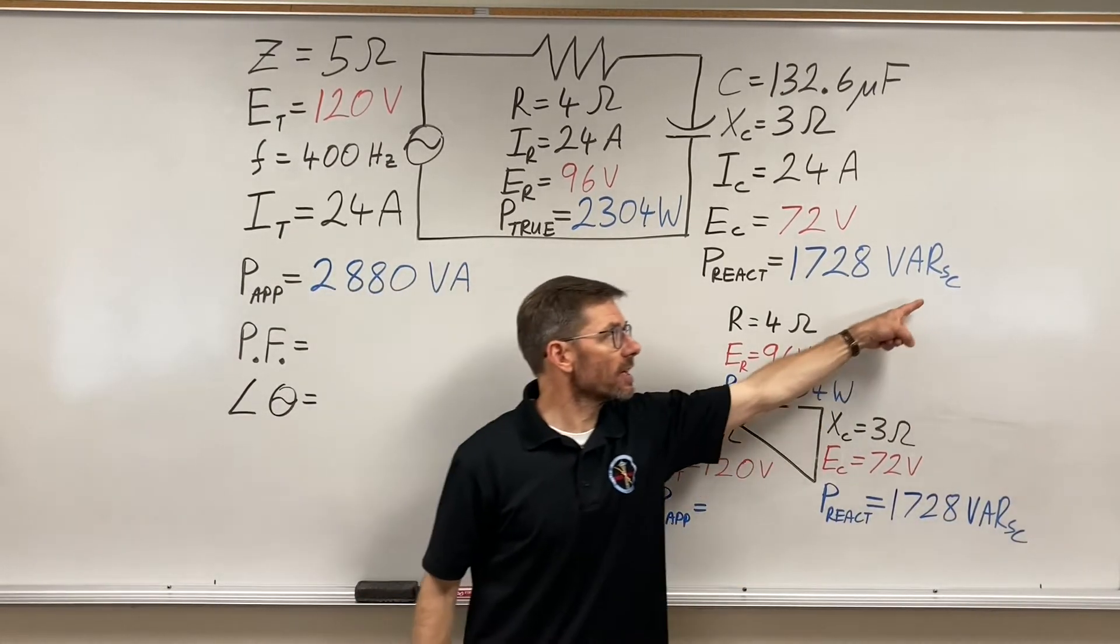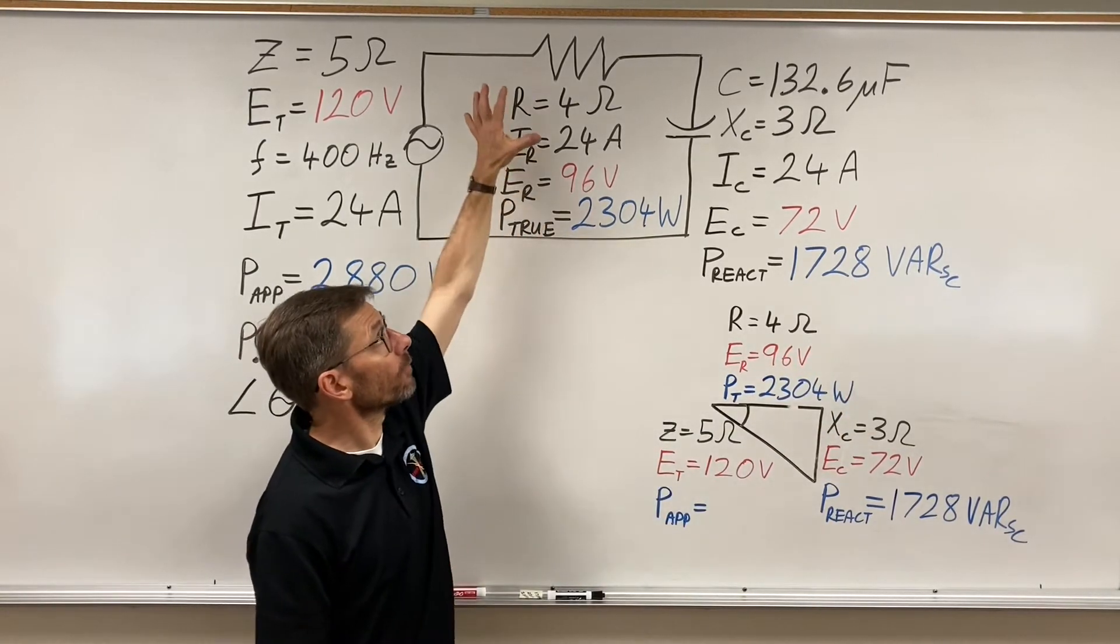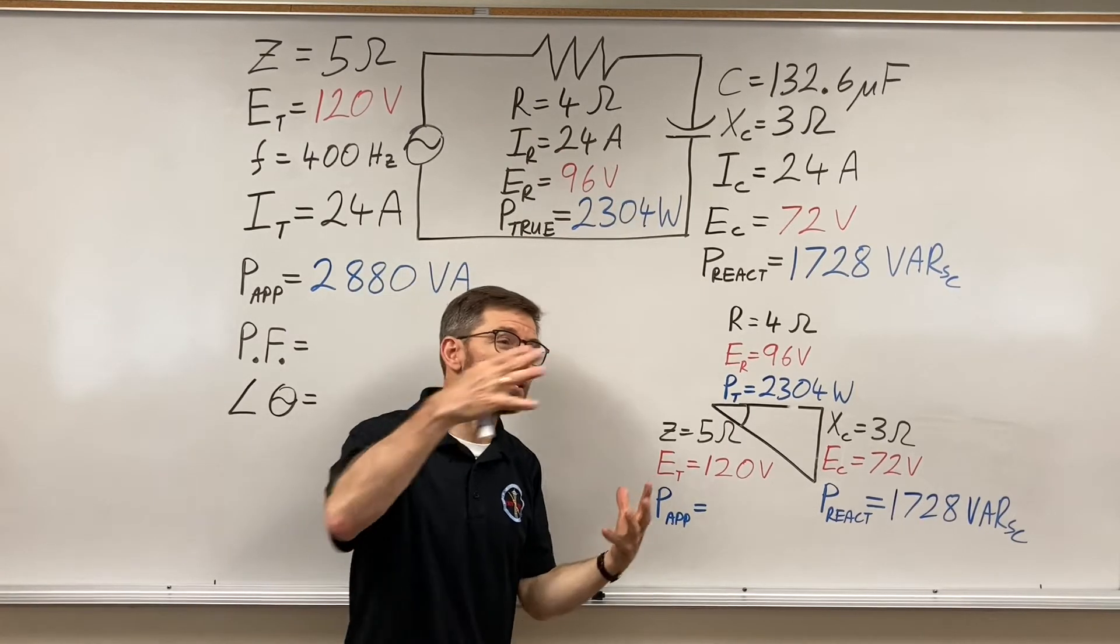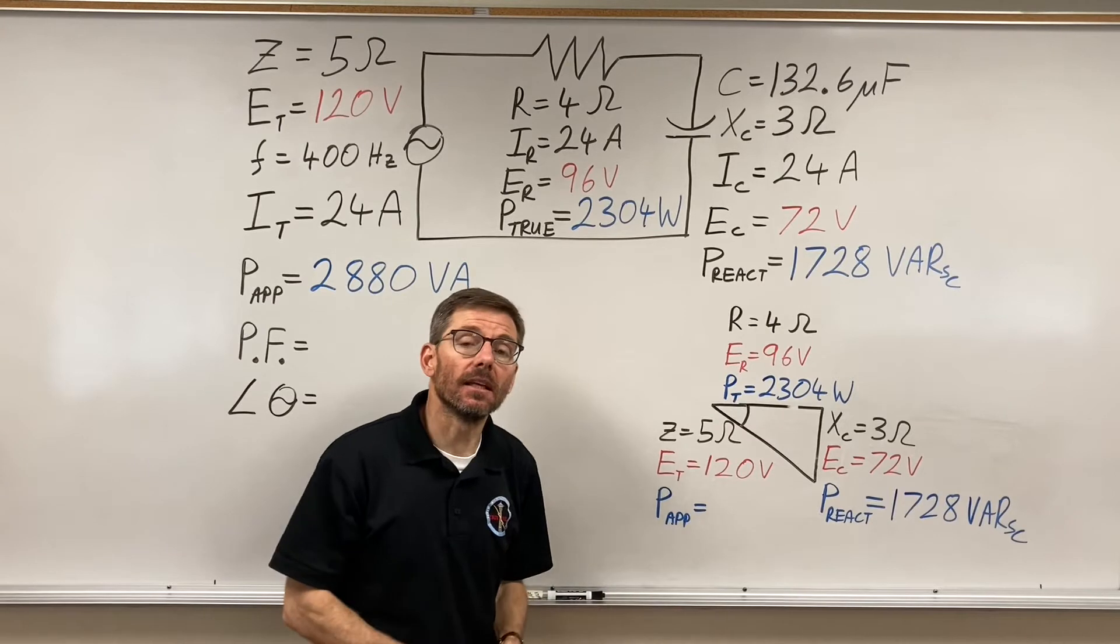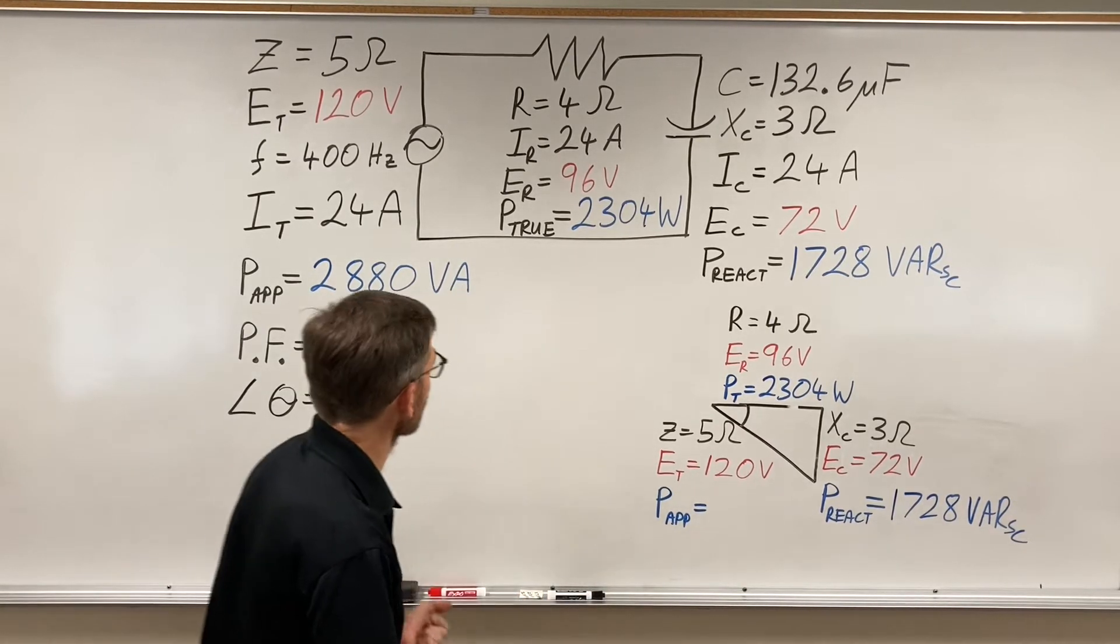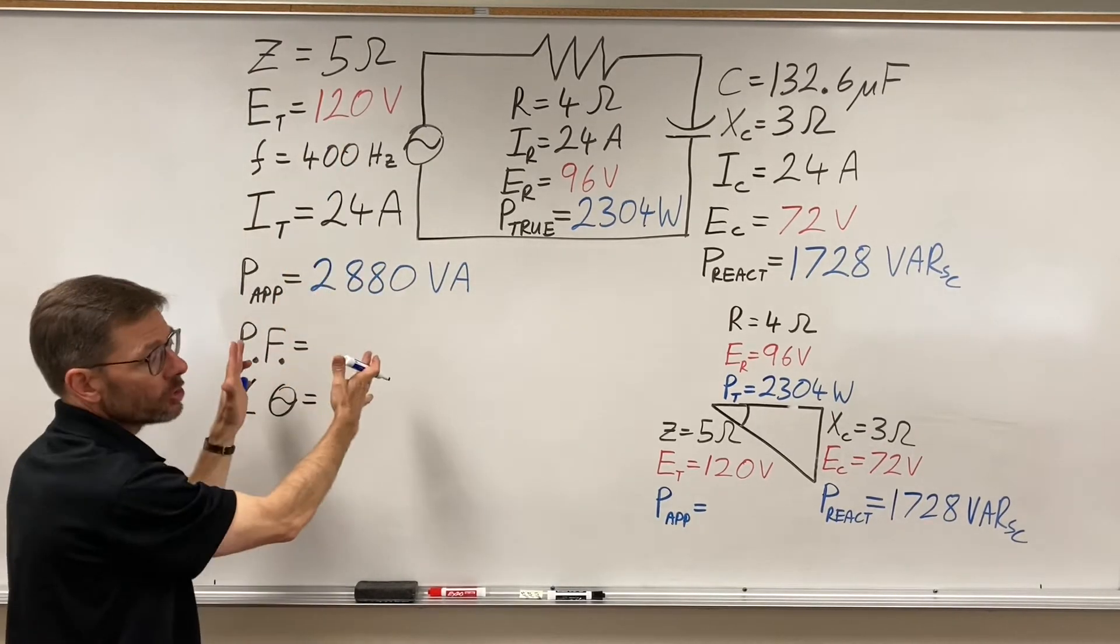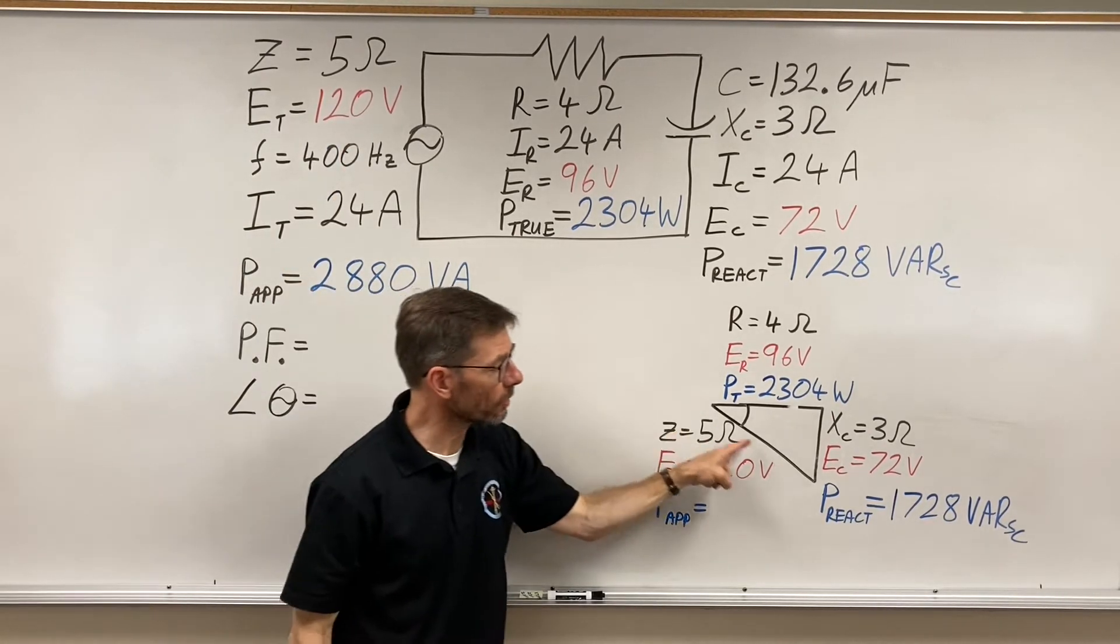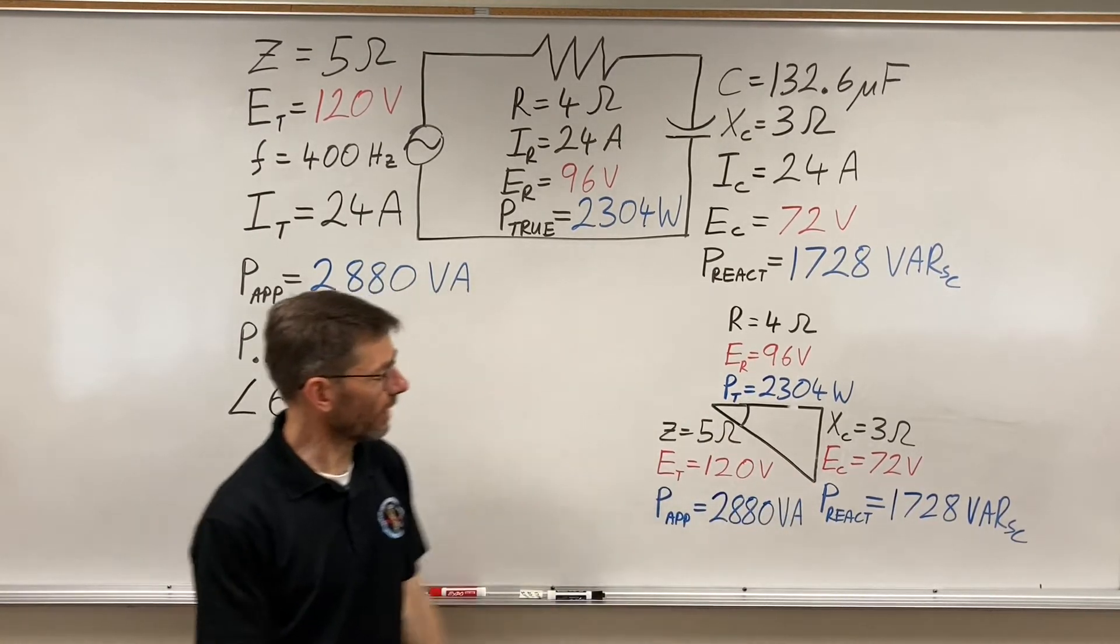And I put the C there just to define it as capacitive. Not important when I have resistive, but once we mix up in AC4, we mix up capacitors and inductors, then we've got to know whose power is whose. And the VA, the total circuit values, always are represented by the hypotenuse, volt amps.